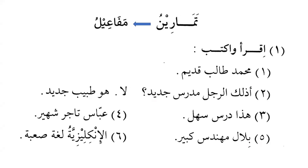Let's do the exercises. We see something here: it says 'tamarinu'. We can see that tamarinu does not have tanwin. Does anyone remember why there is no tanwin on that? Why is it not 'tamarinun' and why is it 'tamarinu'?